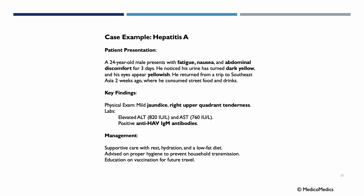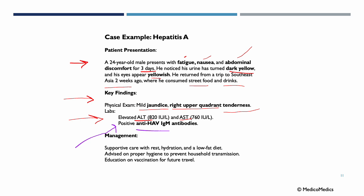A case example: a 24-year-old male presents with fatigue, nausea, and abdominal discomfort for three days. He notices dark yellow urine and yellowish eyes. He returned from Southeast Asia two weeks ago where he consumed street food and drinks. Clinical examination reveals mild jaundice, right upper quadrant tenderness, and elevated ALT and AST. Serology confirms anti-Hepatitis A virus IgM antibodies. Management: supportive care with rest, hydration, and low-fat diet, along with hygiene education to prevent household transmission and vaccination advice for future travel.